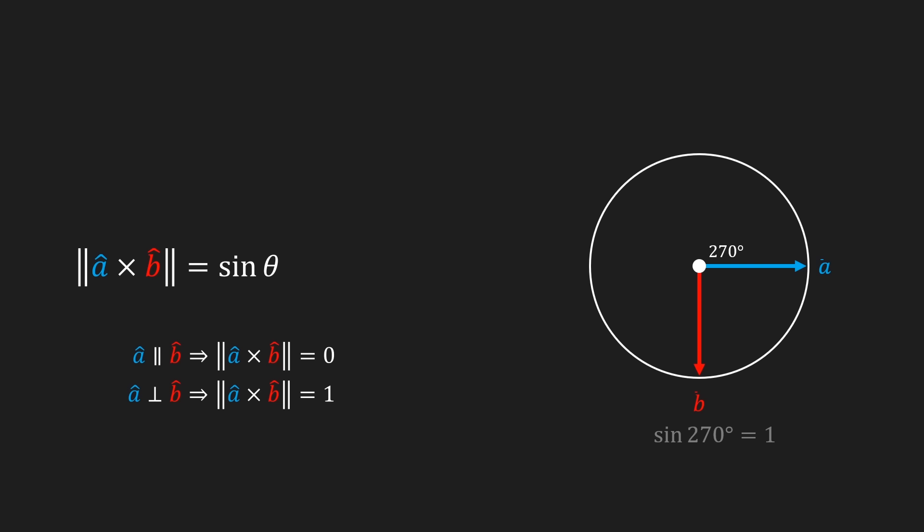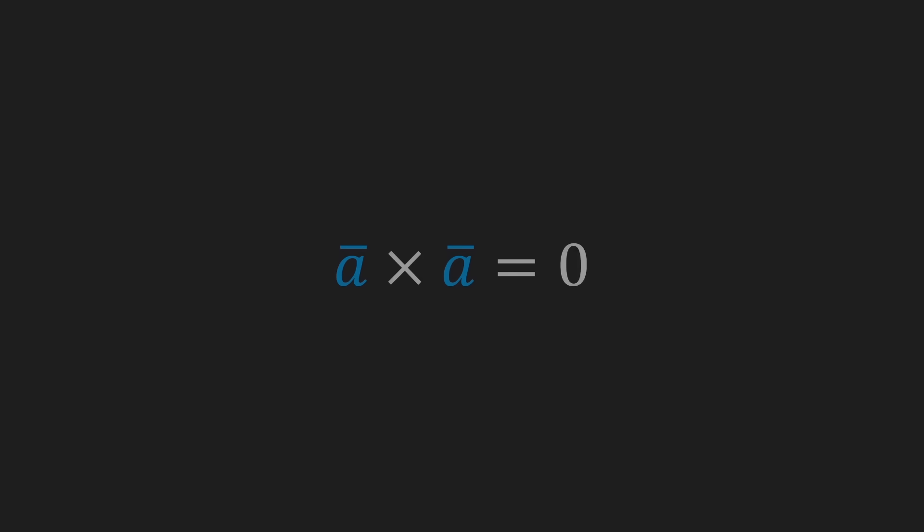This in contrast to the dot product, which was a measurement for how parallel two vectors are. One last interesting property of the cross product is that if you take the cross product of a vector with itself, the result is equal to zero. But once again I'll leave that up to you to figure out why that is.